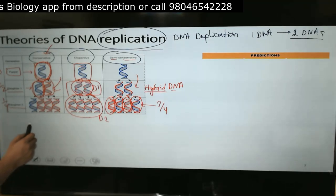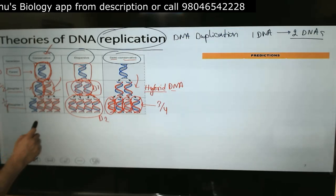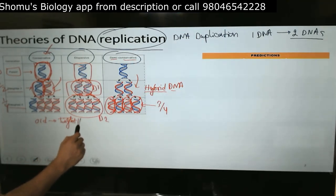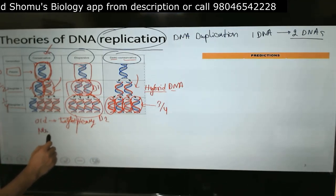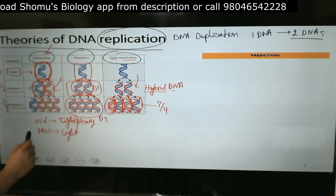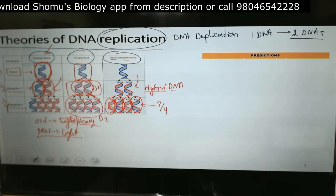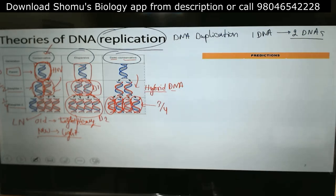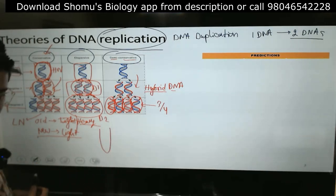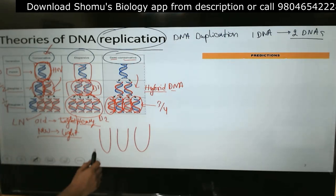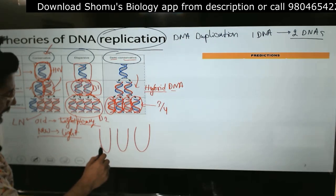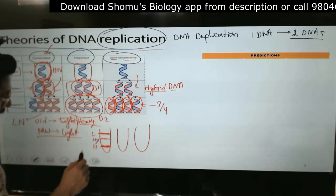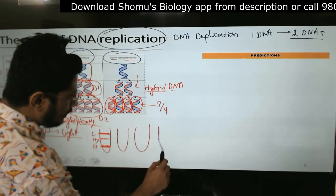If we tag the old DNA as heavy (N15) and grow new DNA in light nitrogen (N14), we can use cesium chloride gradient centrifugation to separate them. Heavy DNA bands at the bottom, light DNA at the top, and hybrid DNA in the middle. We can then compare the band patterns predicted by each of the three replication models.